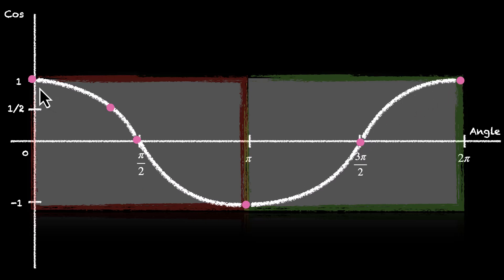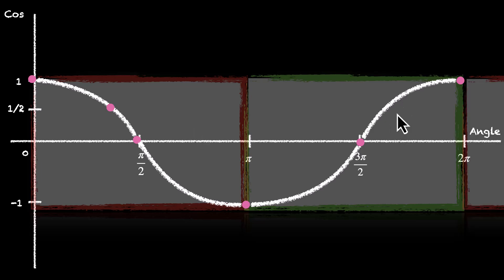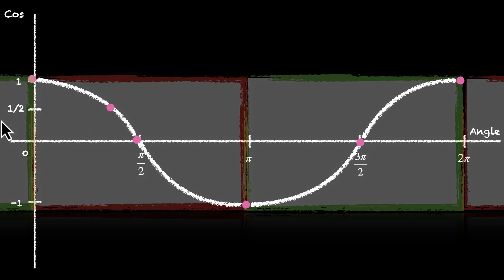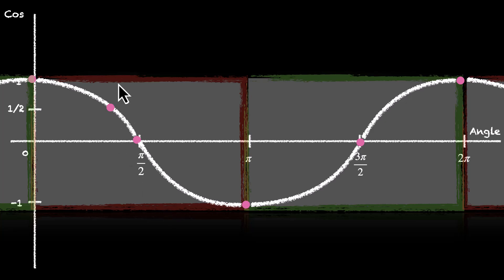This is the graph of cos x for the first four quadrants. Because it cycles, it takes the same form in the next quadrants — it goes down, then up, then down. And if we continue the graph, it will go down again, then go up and reach the starting point. So it's basically going up, down, up, down. This is the graph of cos x.